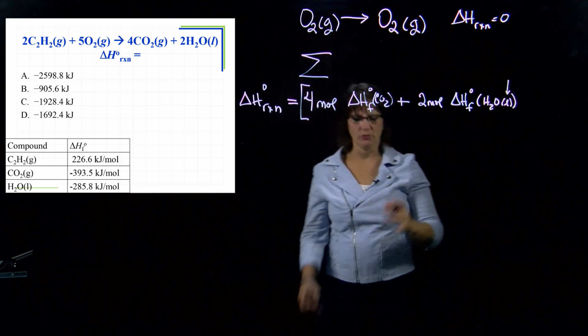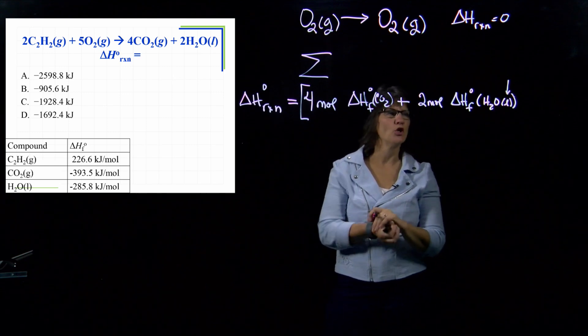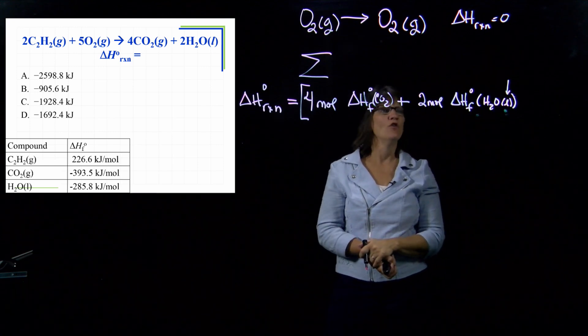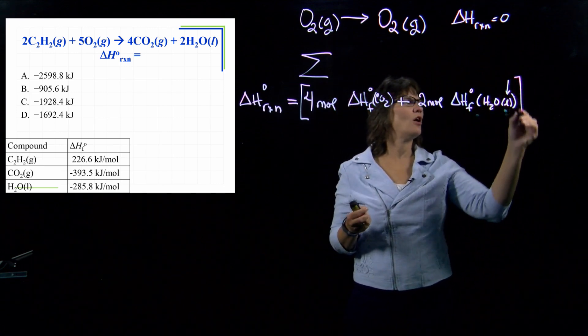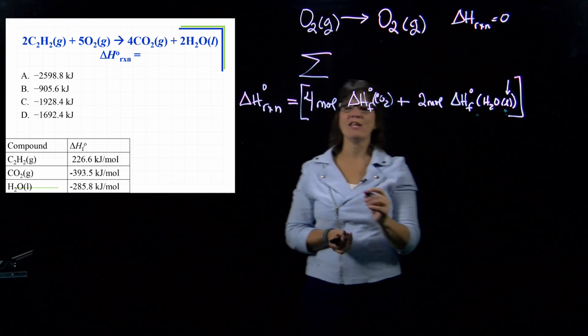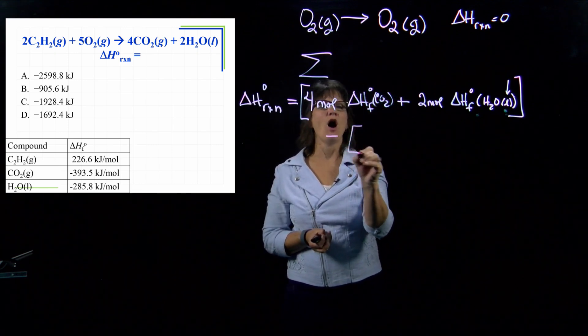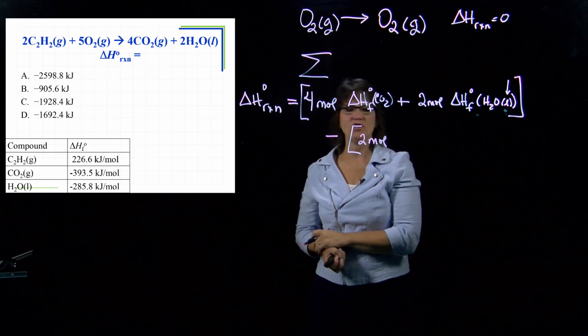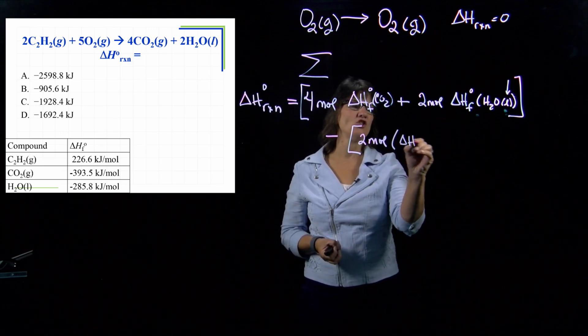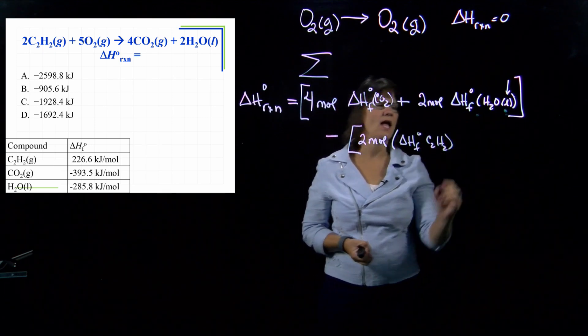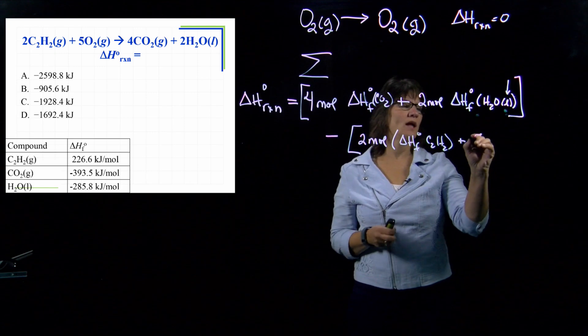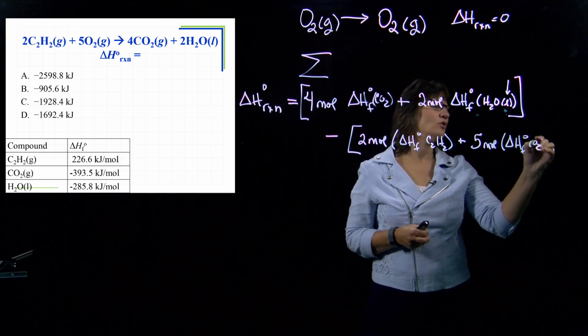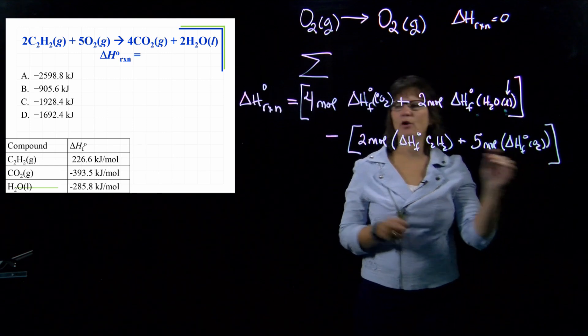While I'm thinking about it, make sure you're very careful. When you go to tables, because I've pulled out the right ones for us down here, but when you go to tables, it'll have H2O liquid, it'll have H2O gas, it'll have H2O solid, and you need to choose the right one for your problem. So that is the summation of all the products. And then you are going to, it's products minus reactants, you're going to subtract from that all of the delta H of formations of the reactants. So I have two moles of the C2H2 times the delta H of formation of the C2H2. And then we have, for the oxygen, we have five moles of O2 times the delta H of formation of the O2.